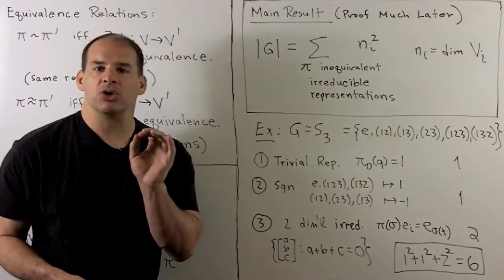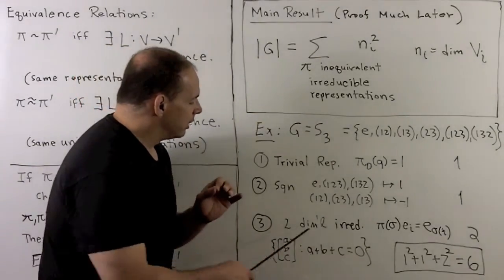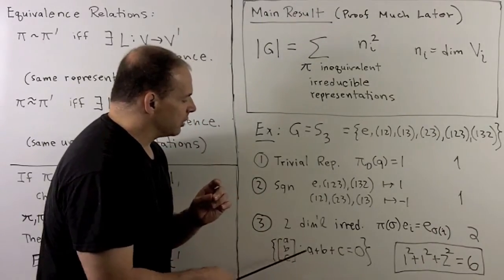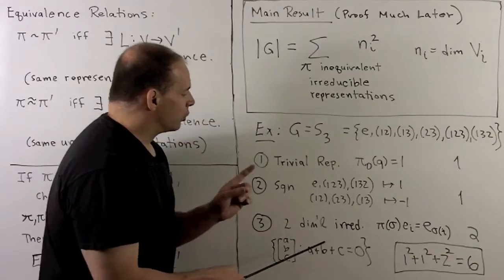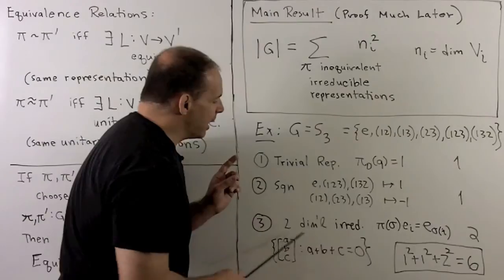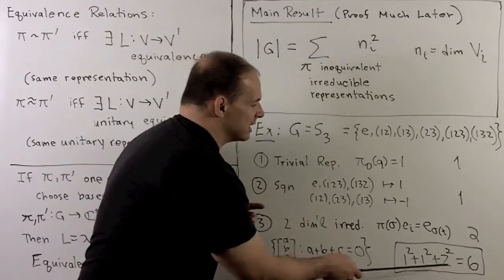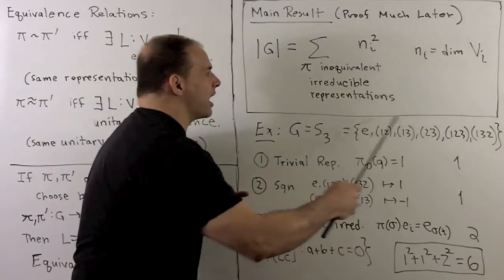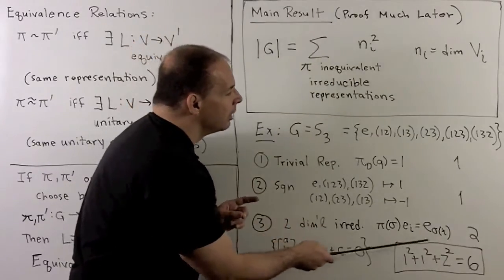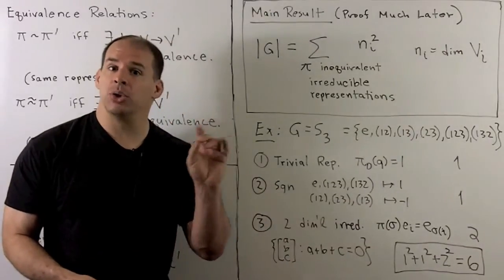Then we have a two-dimensional irreducible representation. Our vector space is in C³ — we take the sum of the coordinates equal to zero. The group action acts on the labels of the standard basis. This has dimension two. So we have one-squared plus one-squared plus two-squared equals six, which equals the order of the group. By our theorem, that's everything. The first two are inequivalent because they're not equal as functions, and the third has a different dimension. So that's everything up to equivalence.